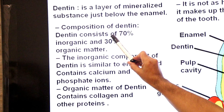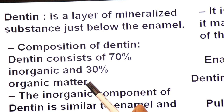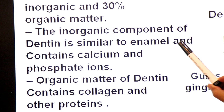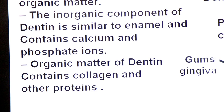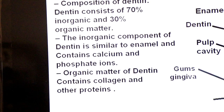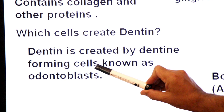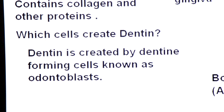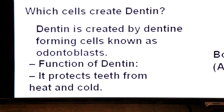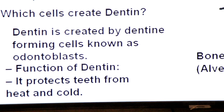Dentin is a layer of mineralized substance just below the enamel. It is not as hard as enamel and it makes up the major portion of the tooth. Dentin consists of 70% inorganic and 30% organic matter. The inorganic components are similar to enamel and contain calcium and phosphate ions. The organic matter contains collagen protein and other proteins. Dentin is created by dentin-forming cells known as odontoblasts, which are found in the pulp region. The function of dentin is to protect the teeth from heat and cold.